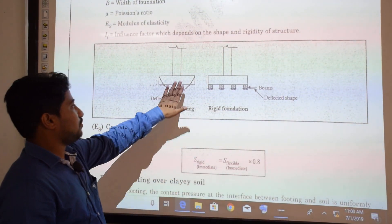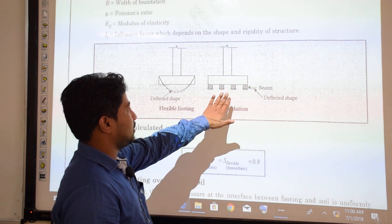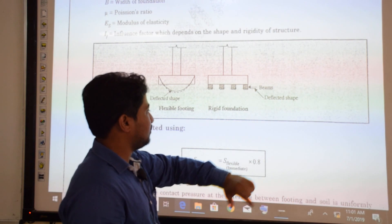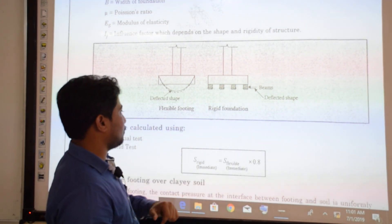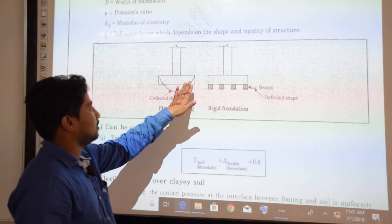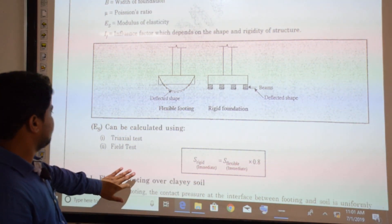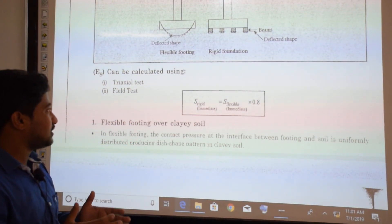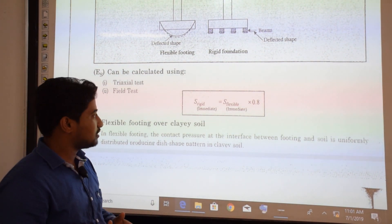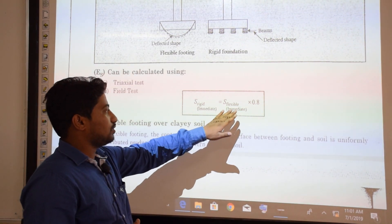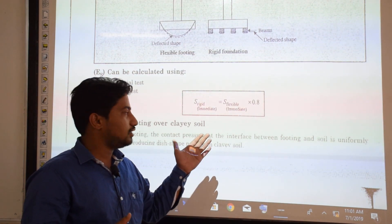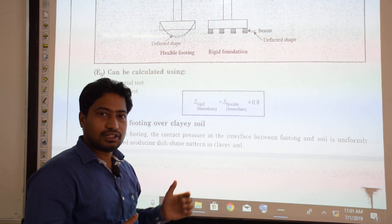For a rigid foundation, the footing rests over a beam and the lower portion shows the deflected shape. For a flexible foundation, the foundation deflects from the center itself. The modulus of elasticity ES can be calculated using a triaxial test or field test. For the rigid case, multiply the flexible immediate settlement by 0.8.